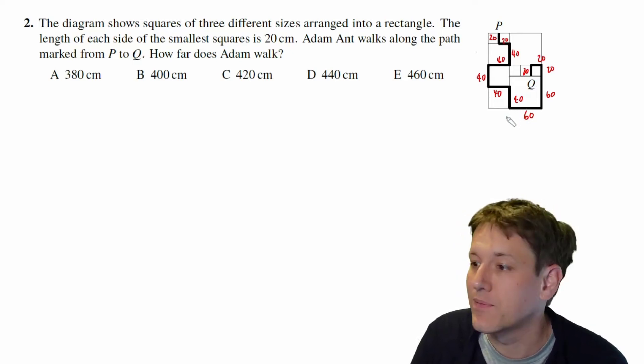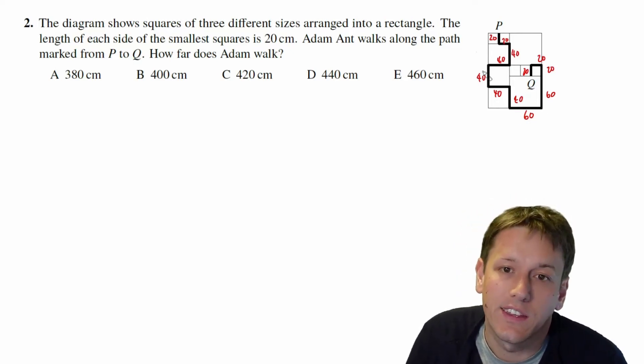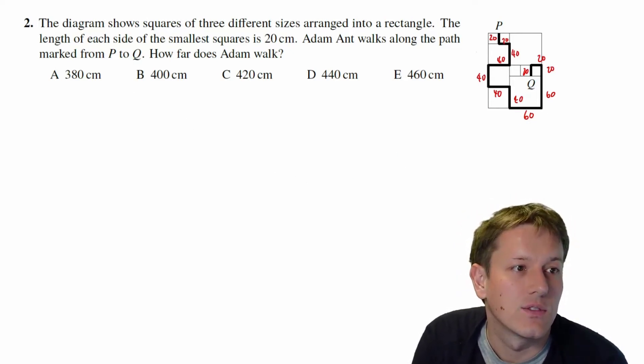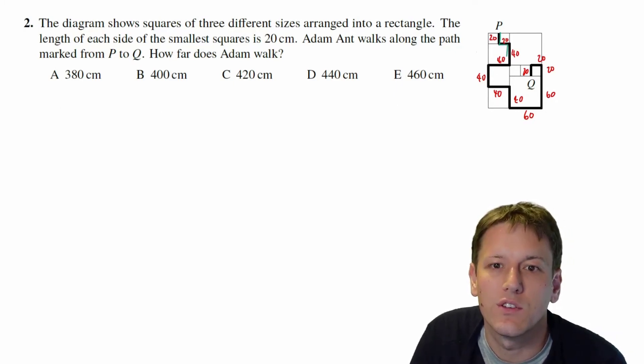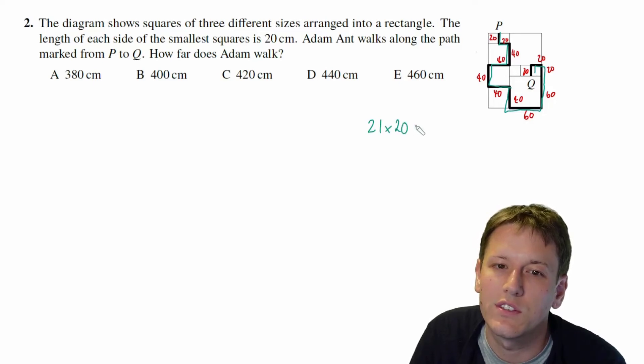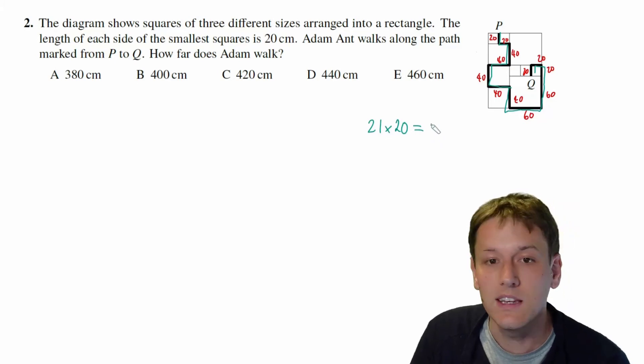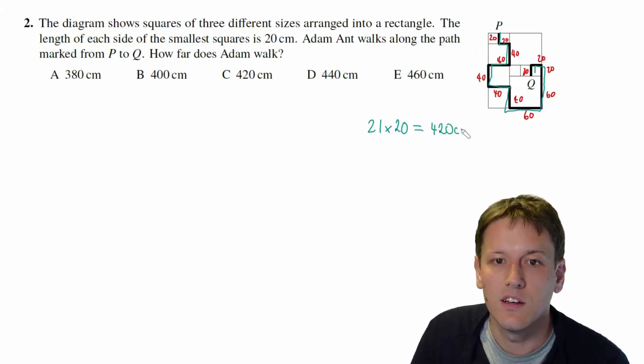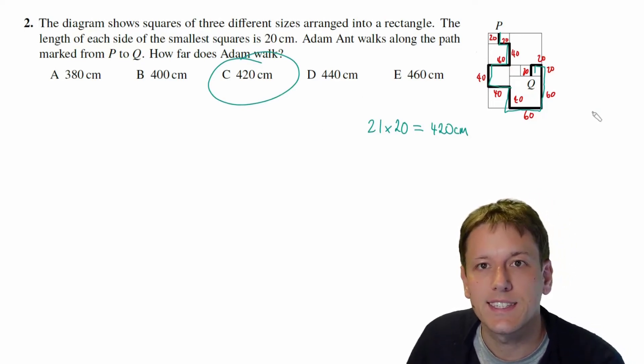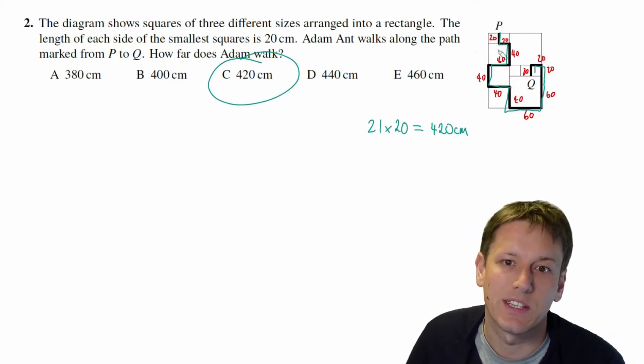I just need to add all of these together. Alternatively, I think the way I did this when I first saw this question was to just count how many 20s there are, so there's 21 lots of 20, which is 21 times 2 times 10, which is 42 times 10 or 420 centimeters. And so the answer there is C, and you'd get the same thing of course by just adding up all of the red numbers that I've written on this diagram.